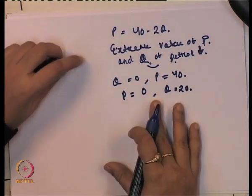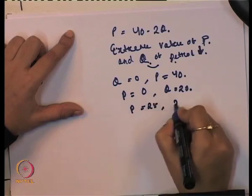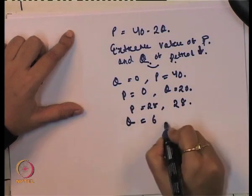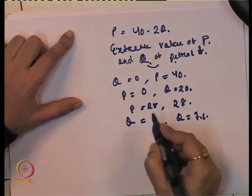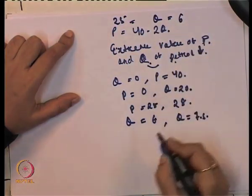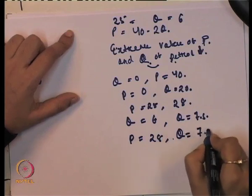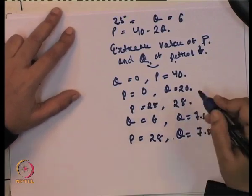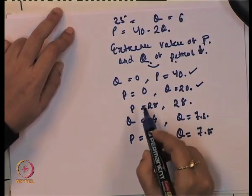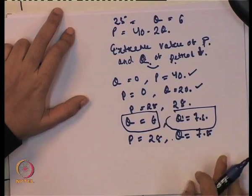Substituting P = 25 into the demand function gives Q = 7.5, and substituting P = 28 gives Q = 6. So when the price is 25 the quantity demanded is 7.5, and when the price rises to 28 the quantity demanded falls to 6.